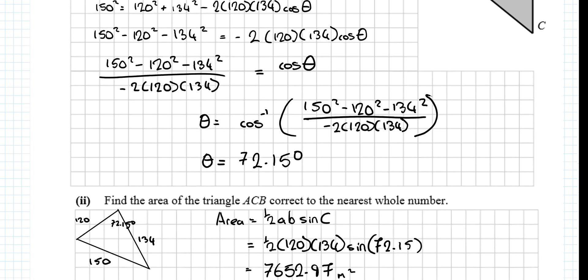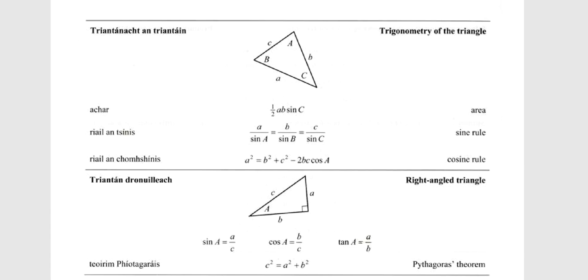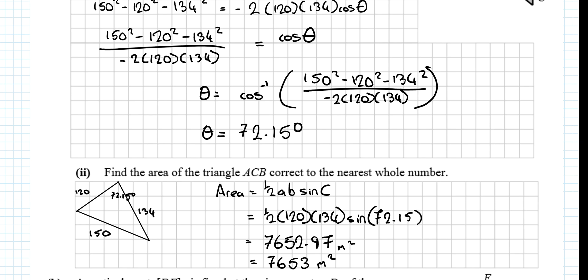Next question, then. Find the area of the triangle. Well, there's two formulas that we can use. We can use half the base by the perpendicular height if it's right-angled, or if it's non-right-angled, we can use this first formula here on the page, half AB sine C, which is commonly referred to as half the product of two sides by the angle between them.